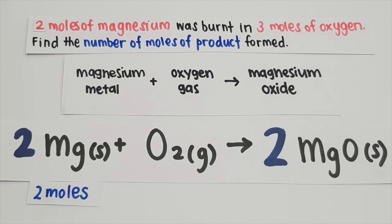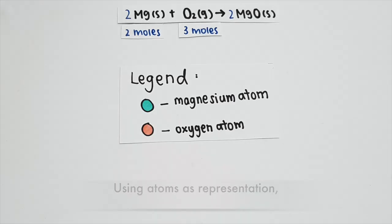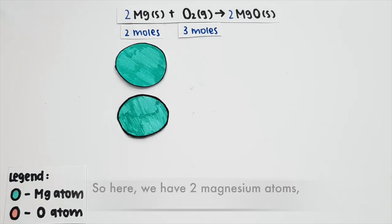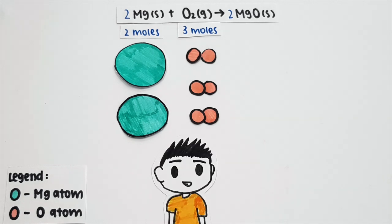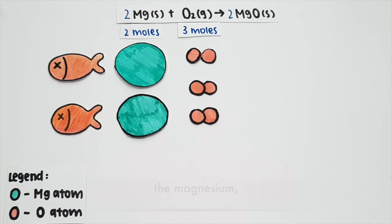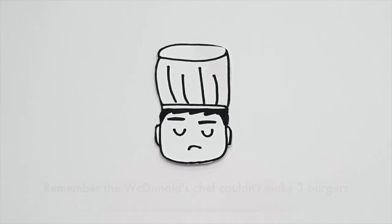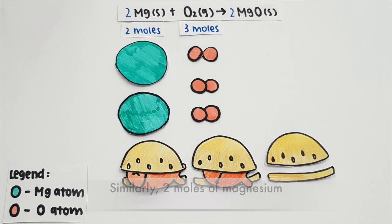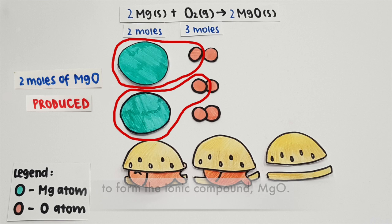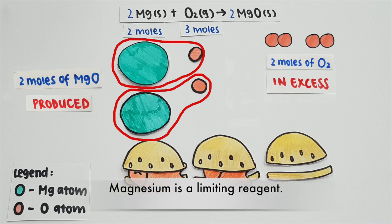Looking back at the question, there are two moles of magnesium being reacted with three moles of oxygen. So how many moles of magnesium oxide will we get? Using atoms as representation, one magnesium atom represents one mole of magnesium. So here we have two magnesium atoms and three moles of oxygen molecules. This looks similar to the burger recipe — we have the fish representing the magnesium and the bread representing the oxygen molecules. Two moles of magnesium can only react with one mole of oxygen molecules to form magnesium oxide. We have an excess of oxygen, but we do not have enough magnesium to form more magnesium oxide. Thus, magnesium in this question is the limiting reagent.